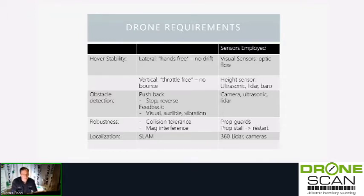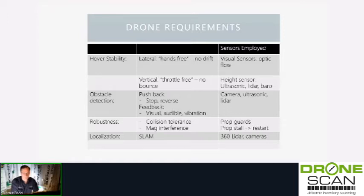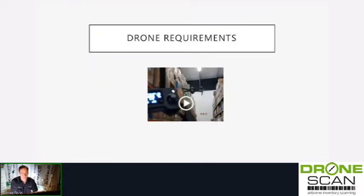Mag interference is a big problem on site — just find a place and fly it into the facility if you have to. It's likely caused by rebar in the floors. The next thing is localization: everyone wants their drones to just fly around the factory and come back and land. That needs SLAM — System Localization and Mapping — which isn't really available at the moment as far as I know. Let's hope we get it soon.